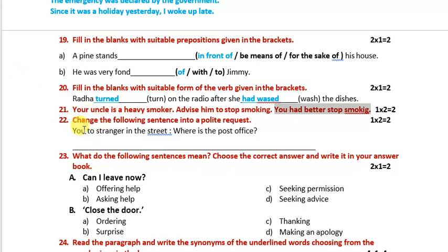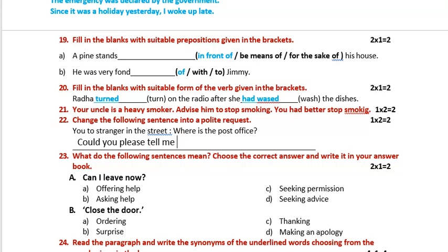The next one: change the following sentence into a polite request. You say to a stranger in the street: 'Where is the post office?' In a polite way: 'Could you please tell me where the post office is?'